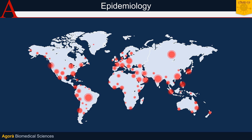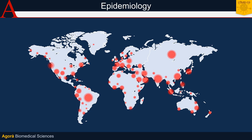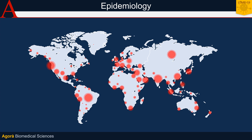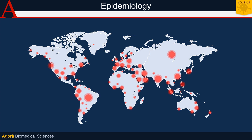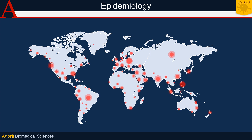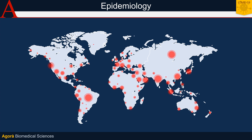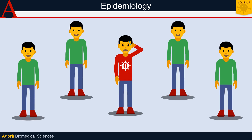To date, May 26, the day we're recording this video, SARS-CoV-2 has infected more than 5 million people worldwide, and this is what we call a pandemic. But how did we reach, in such a short time, these numbers starting from just one infected person — patient zero?